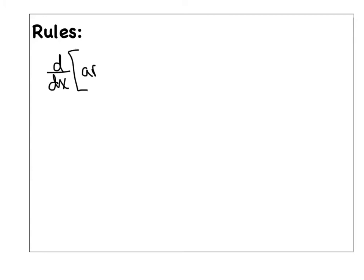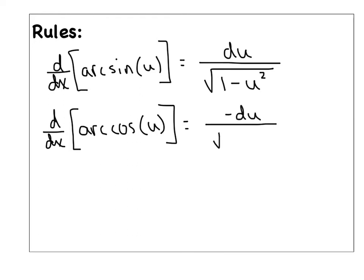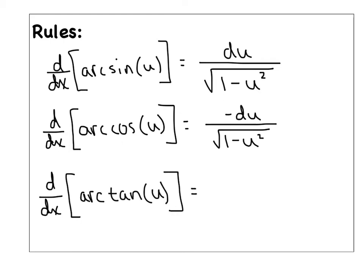I've got three new rules for you — this is our first calculus moment of the video. The first rule is for the derivative of arcsin(u): it's the derivative of u divided by the square root of 1 minus u squared. The second rule for arccos(u) is almost the same, but we negate du — negative du over the same radical. The third, which shows up most frequently on the AP exam, is the derivative of arctan(u): it's du divided by 1 plus u squared — we throw away the radical and change the minus to a plus.